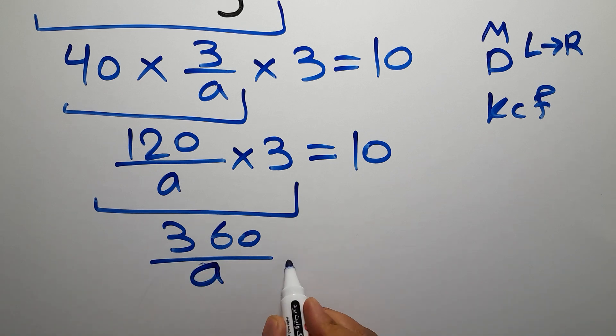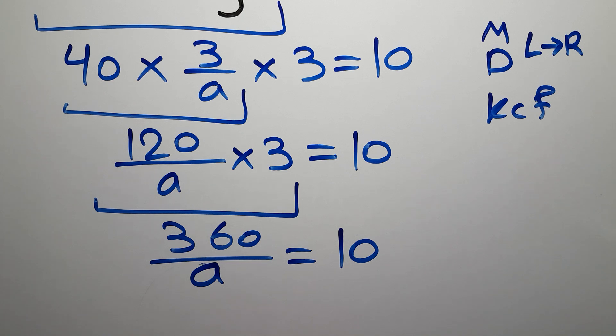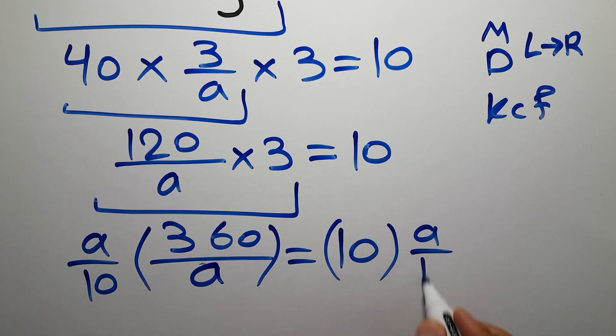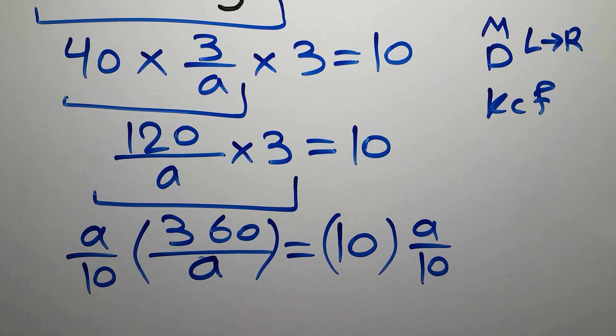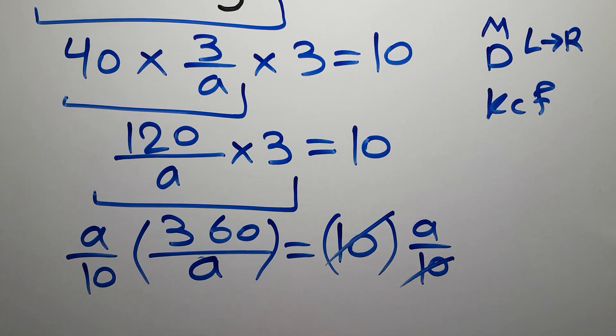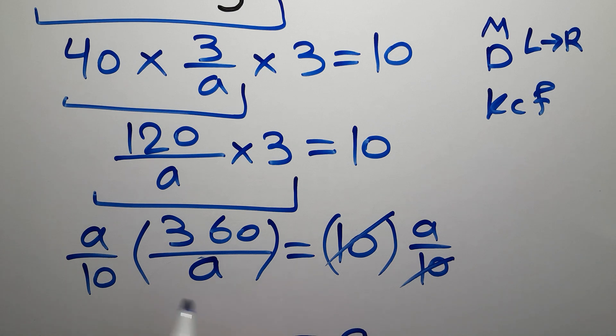Let's multiply both sides by a over 10. This 10 and this 10 cancel each other out, so on the right-hand side we have just a. On the left-hand side, this a and this a cancel each other out.